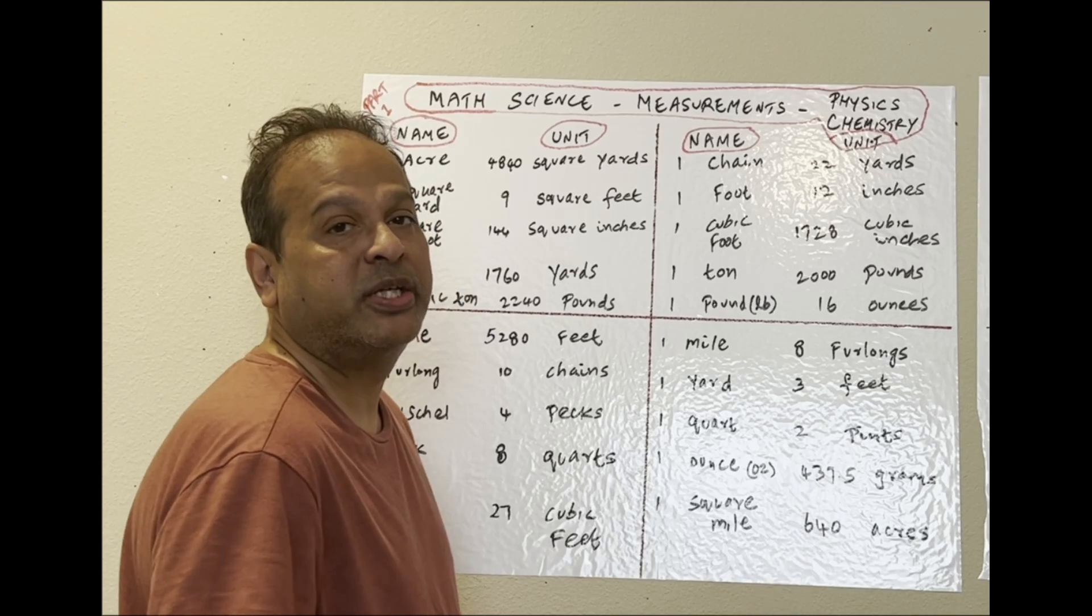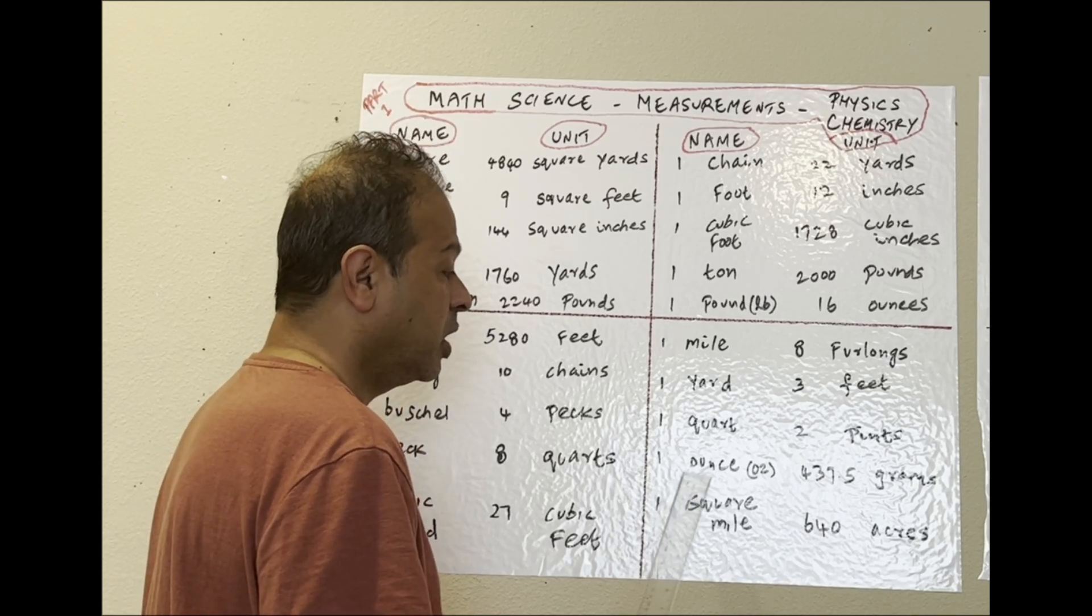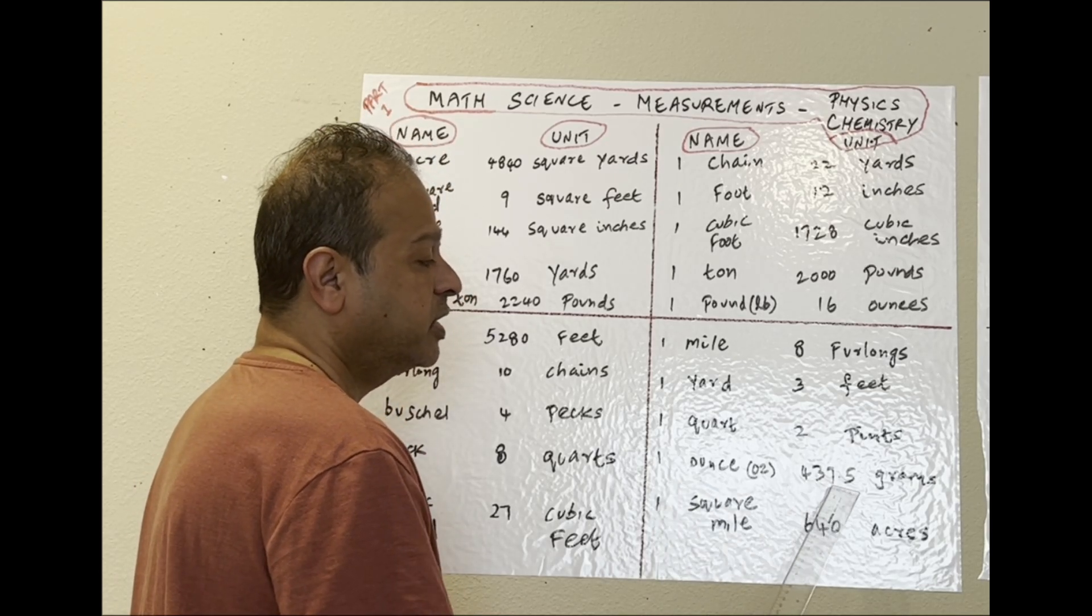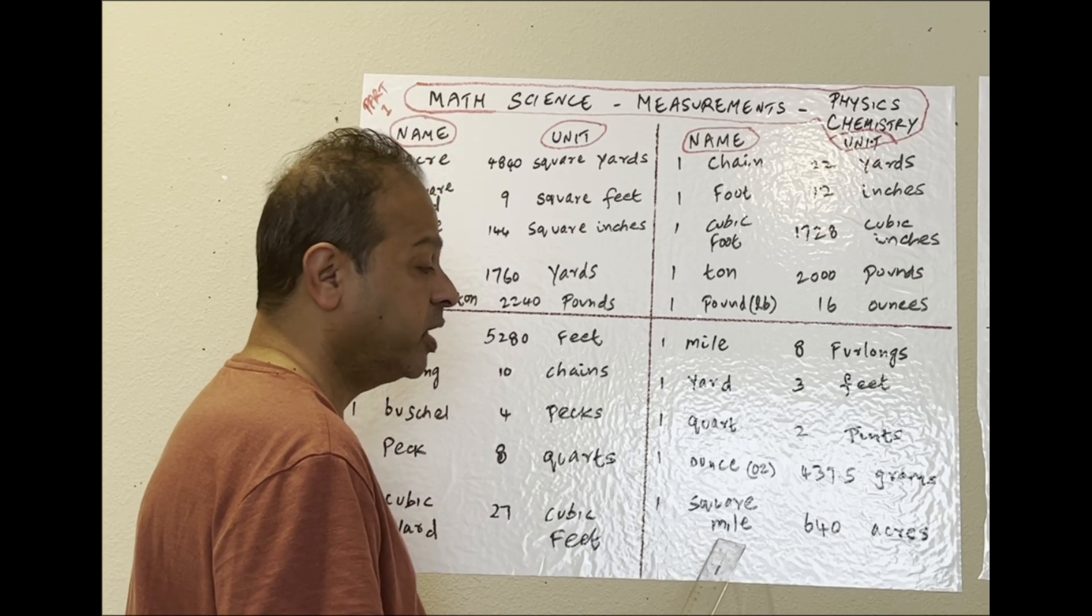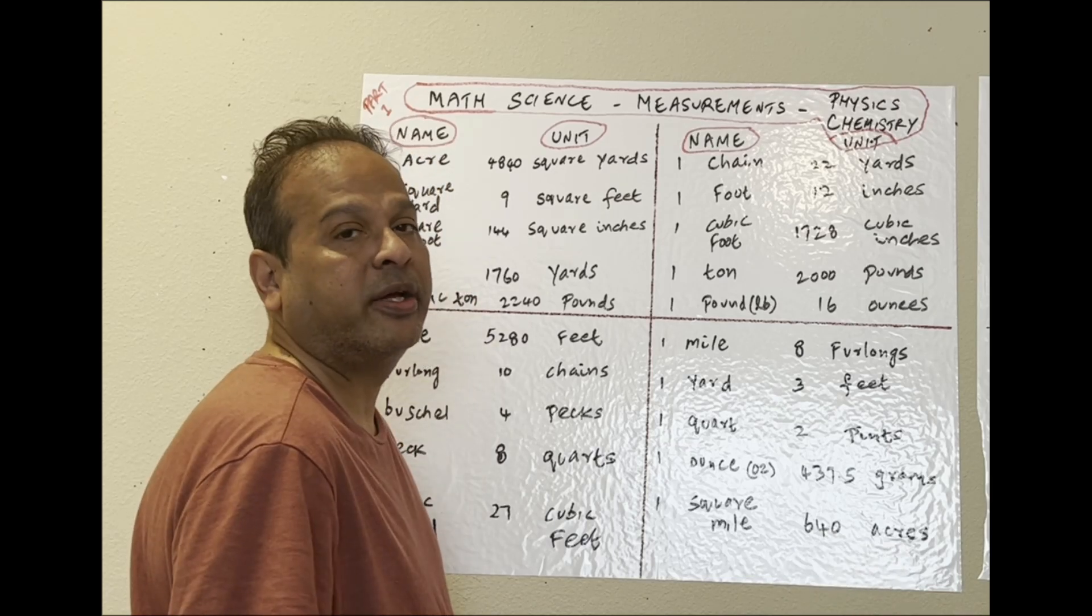One quart is two pints. One ounce is 437.5 grams. One square mile: 640 acres.